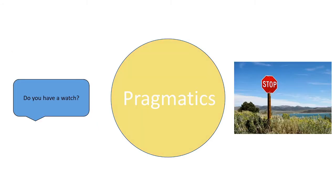The final level is pragmatics, which considers the context in which language takes place. For instance, what is the meaning of the question, 'Do you have a watch?' In one case, it could mean 'What time is it?' If you're shopping for a watch, it could also mean, 'Do you want to go to that store and buy a watch?'